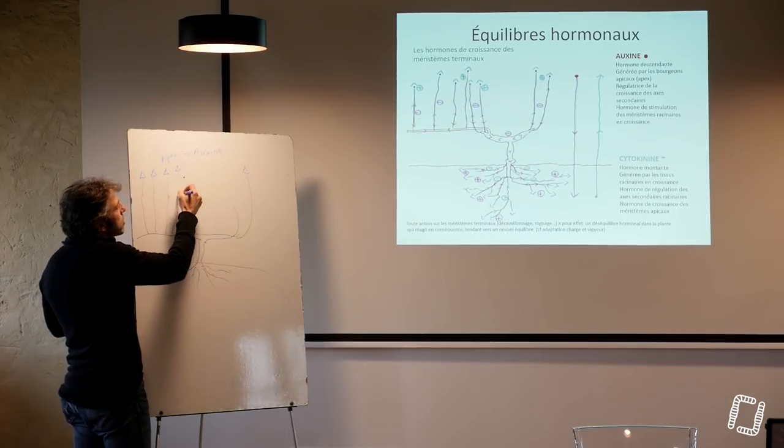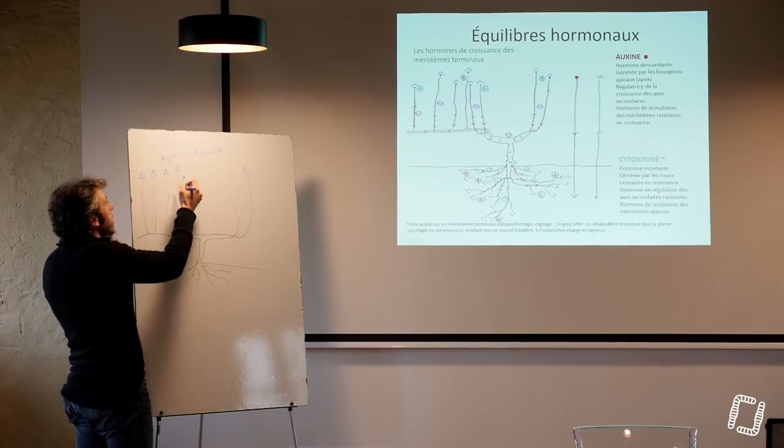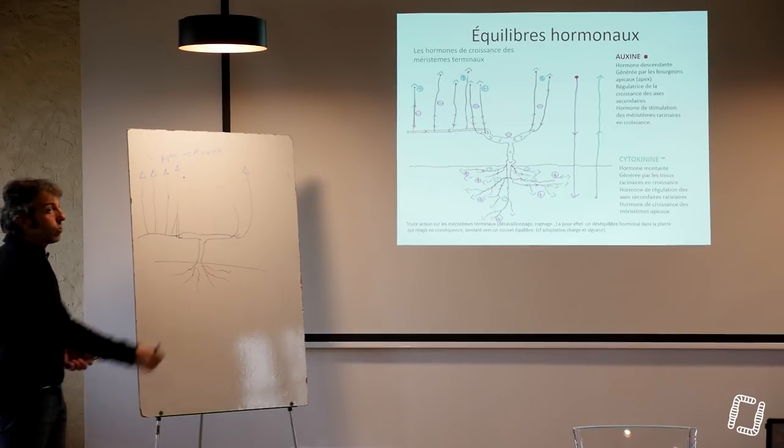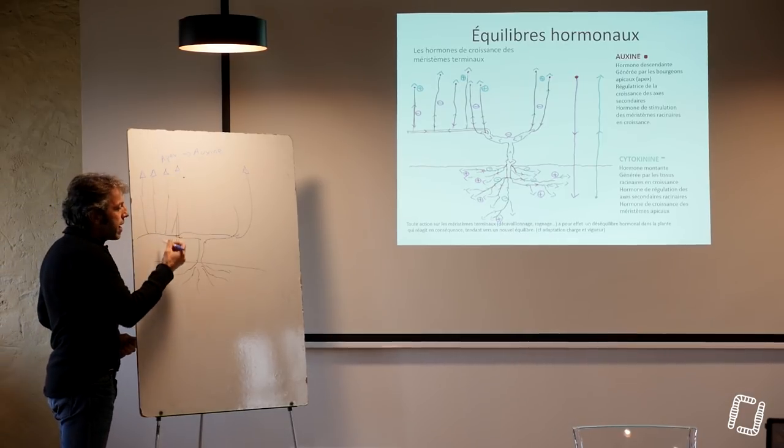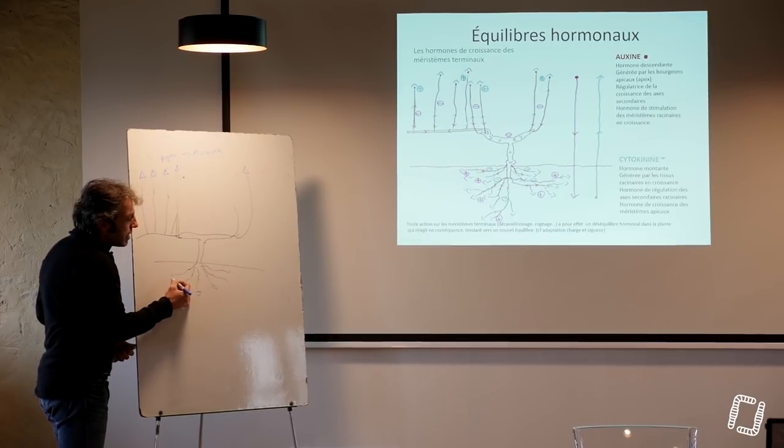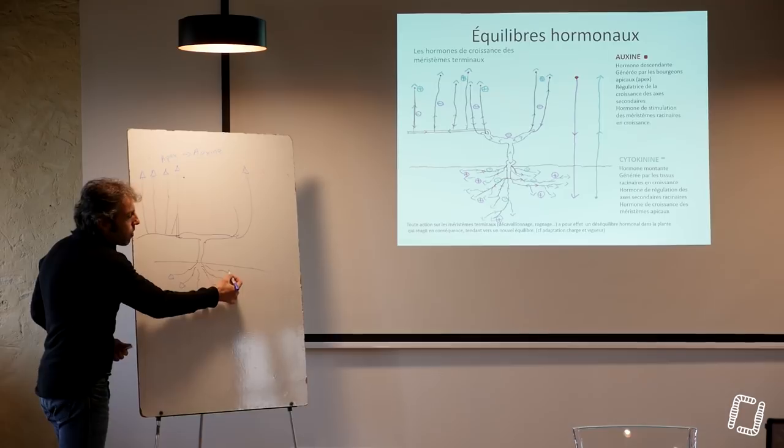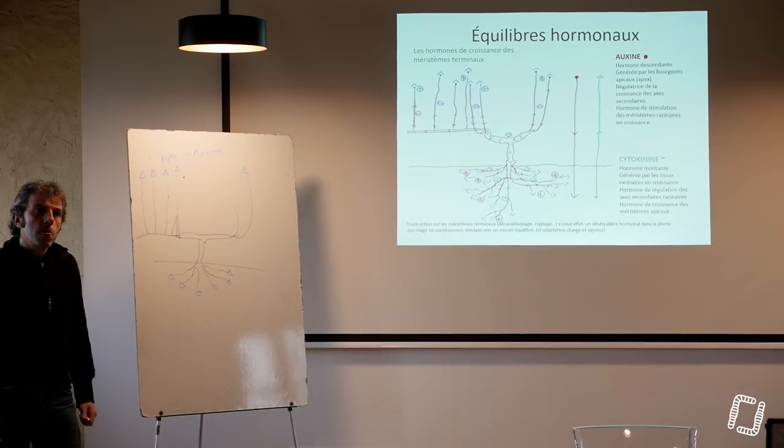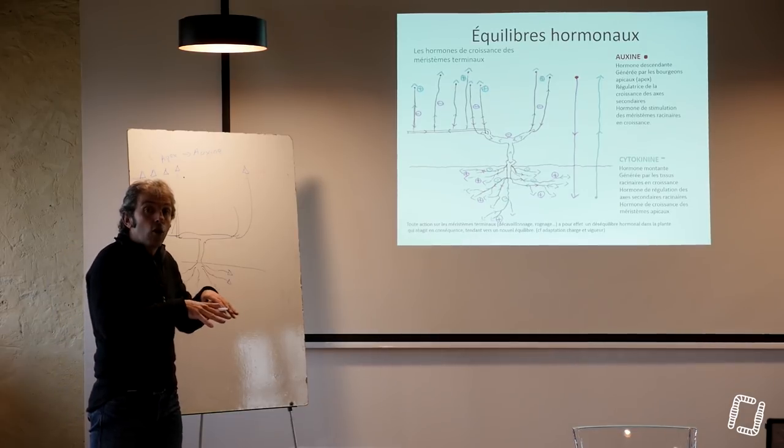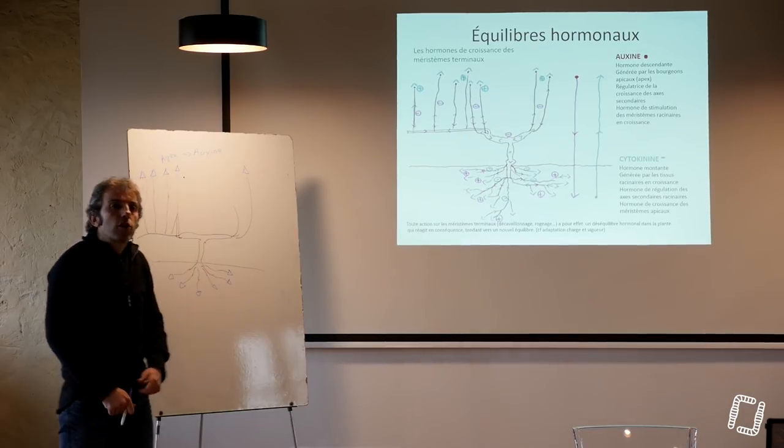Cette auxine est une hormone de régulation des axes secondaires, c'est-à-dire que ça va limiter la croissance des axes secondaires. Donc, quand le sarment va pousser, il va continuer à pousser en longueur et empêcher les bourgeons secondaires de se développer. Cette auxine-là est une hormone de régulation des axes secondaires et c'est également, en même temps, une hormone de croissance des axes racinaires en développement et en prospection.